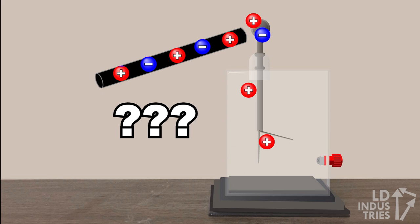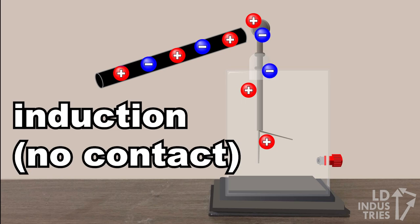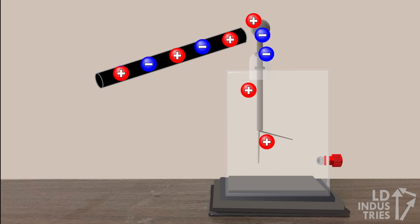There's no conduction taking place. Moving a charged object close to, but not touching another object is called induction. In this example, the positive rod will attract the few electrons left over in the electroscope and pull them up to the top of the electroscope. This is a temporary movement of the electrons called electron migration.